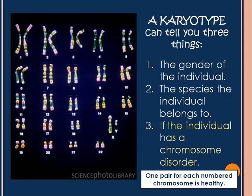The last thing a karyotype can tell you is if the individual has a chromosome disorder. There should be one pair for each numbered chromosome, and if there is, then you have a healthy human. You can see chromosome one has two chromosomes, chromosome two has two, chromosome three has two, chromosome four has two, chromosome five has two, etc.